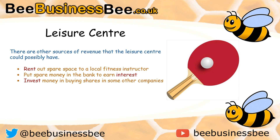If they've got even more cash available, they could invest the money by buying shares in other companies — maybe other fitness companies. By investing that money they get paid a dividend, which is a return on their investment and is a form of revenue coming into the leisure centre. Those are other sources of revenue alongside sales revenue, but typically just think of sales revenue as the most common source you'll find in most businesses.